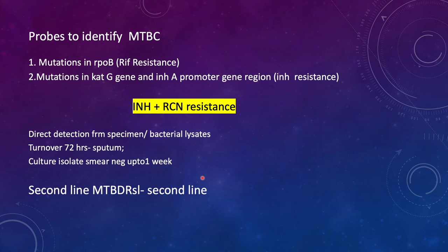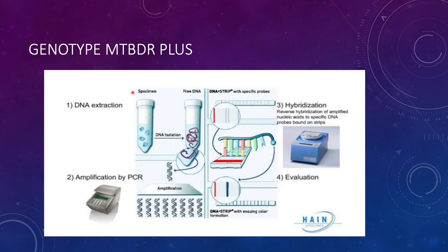So first-line LPA detects INH and rifampicin resistance, and the second-line LPA detects resistance to the second-line agents. The MTB-DR Plus, or Hain test as it is commonly called, extracts DNA from the sample, isolates and amplifies it, and using specific DNA strip technology — a patented technology where reverse hybridization is used — it amplifies the nucleic acids, detects specific DNA probes that are bound, and detects specific mutations, helping identify drug resistance.